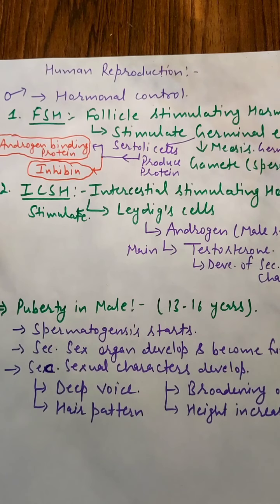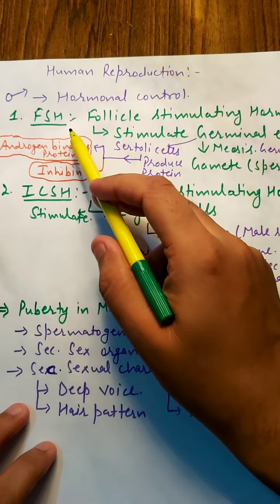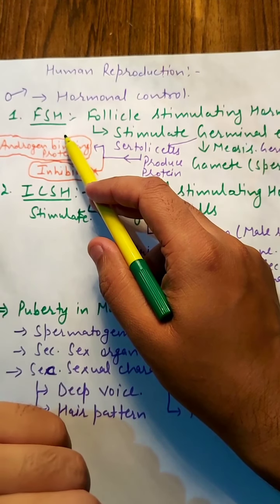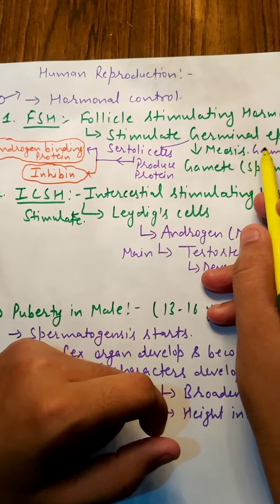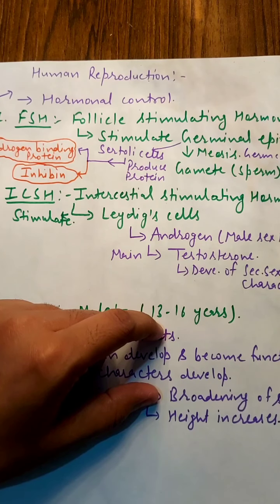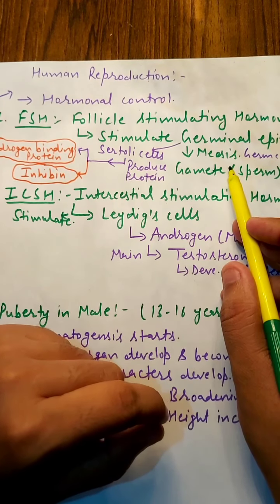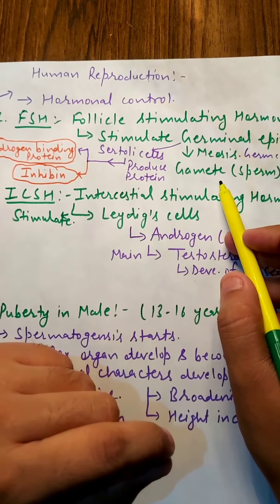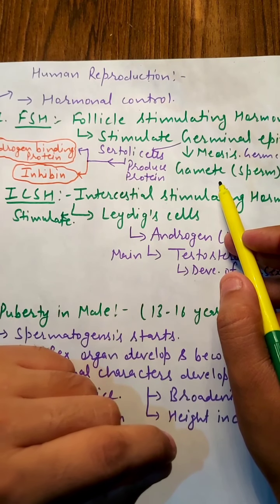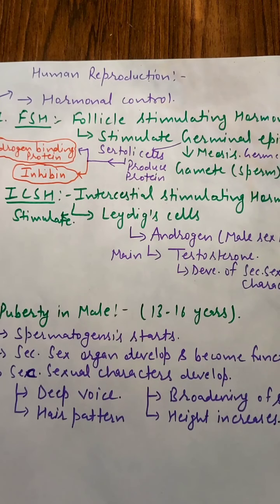First we will take the male reproductive system's hormonal control. FSH — follicle stimulating hormone — will stimulate the germinal epithelium inside the seminiferous tubule, where there is a germ layer. It stimulates that germ layer to undergo meiosis, which creates gametes. The male gamete is the sperm. So there will be production of sperm due to the influence of FSH.